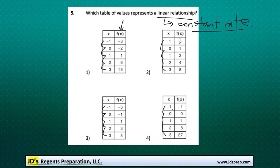For example, in the first one, the difference between -3 and -2 is that it's increasing by 1. From -2 to 1, it's increasing by 3. 1 to 6 increases by 5. So we can see that this is not increasing at a constant rate. It's changing each time.